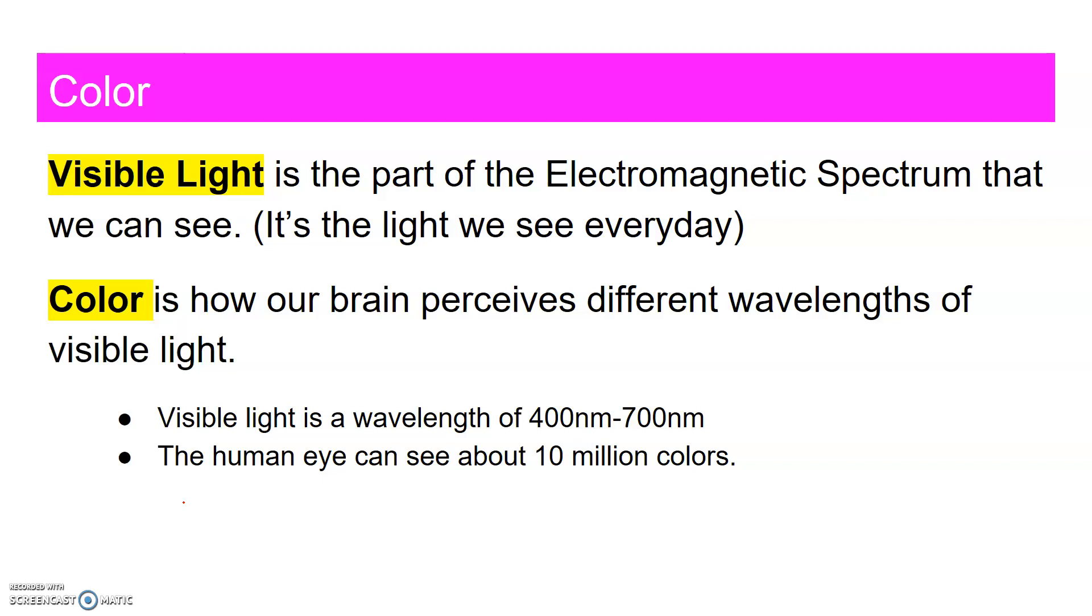Color is how our brain perceives different wavelengths of visible light. There are actually an infinite amount of colors because each color is based on the wavelength of the light. The human eye can distinguish anywhere from 7 million to 10 million colors.